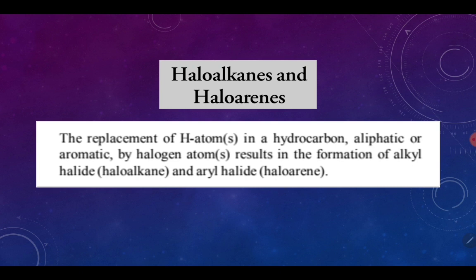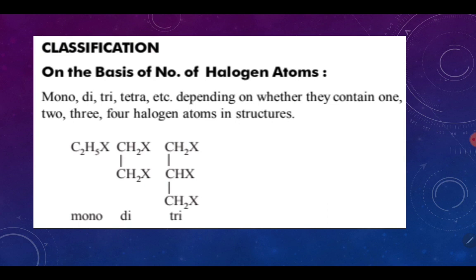Now let's move to the next slide and look at the classification of these compounds. The most basic classification of haloalkanes and haloarenes is based on the number of halogen atoms in the compound. If you have only one halogen atom, the compound is known as a mono derivative. If you have two halogen atoms, it is known as a di derivative. And if you have three halogen atoms, it is known as a tri derivative — and so on.